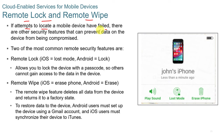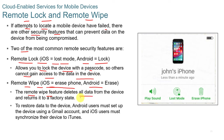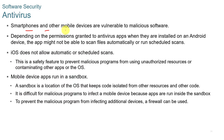If attempts to locate a mobile device have failed, remote lock and remote wipe features can prevent data from being compromised. Remote lock — called Lost Mode on iOS and Lock on Android — allows you to lock the device with a passcode. Remote wipe — called Erase Phone on iOS and Erase on Android — deletes all data and returns the device to a factory state. To restore data, Android users must set up the device using a Gmail account, and iOS users must synchronize using iTunes.